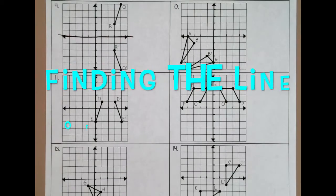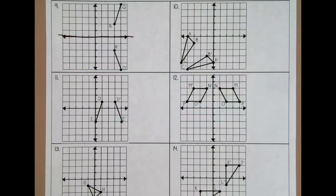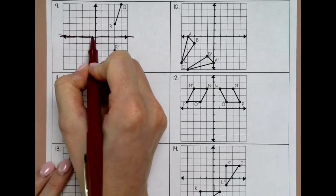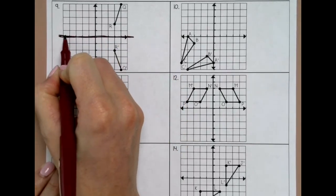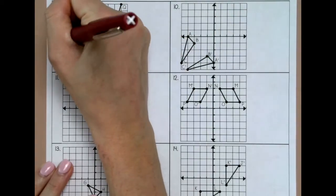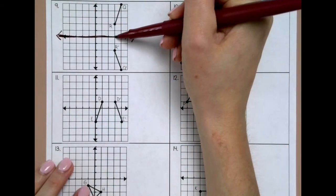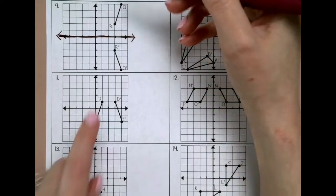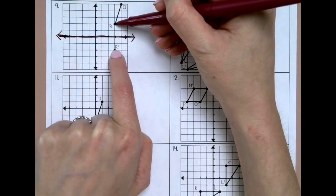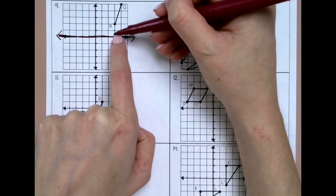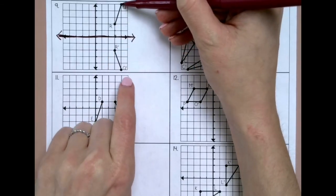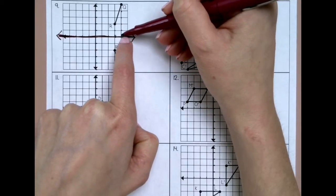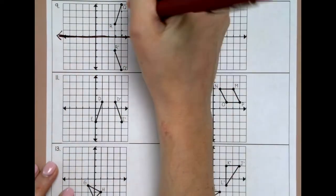This is how to find the line of reflection from a graph. So these have already been reflected for us, and we're trying to find the line of reflection. To find the line of reflection, you basically want to find the middle of two corresponding points - so the middle of R and R prime. You can put your finger and your pencil on the two corresponding points and just walk your way to the middle. I can do the same thing with Q and Q prime, just walking my way to the middle. So it has to fall on this line, which is the x-axis.